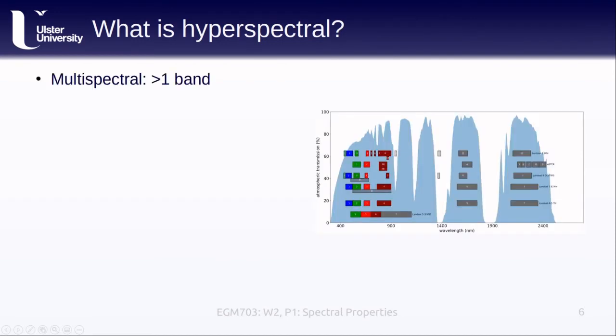In this course so far, we've primarily studied multispectral sensors. These are sensors with more than one band. For example, we've looked at a number of different Landsat sensors, including the multispectral scanner or MSS, the thematic mapper, enhanced thematic mapper plus, and so on.